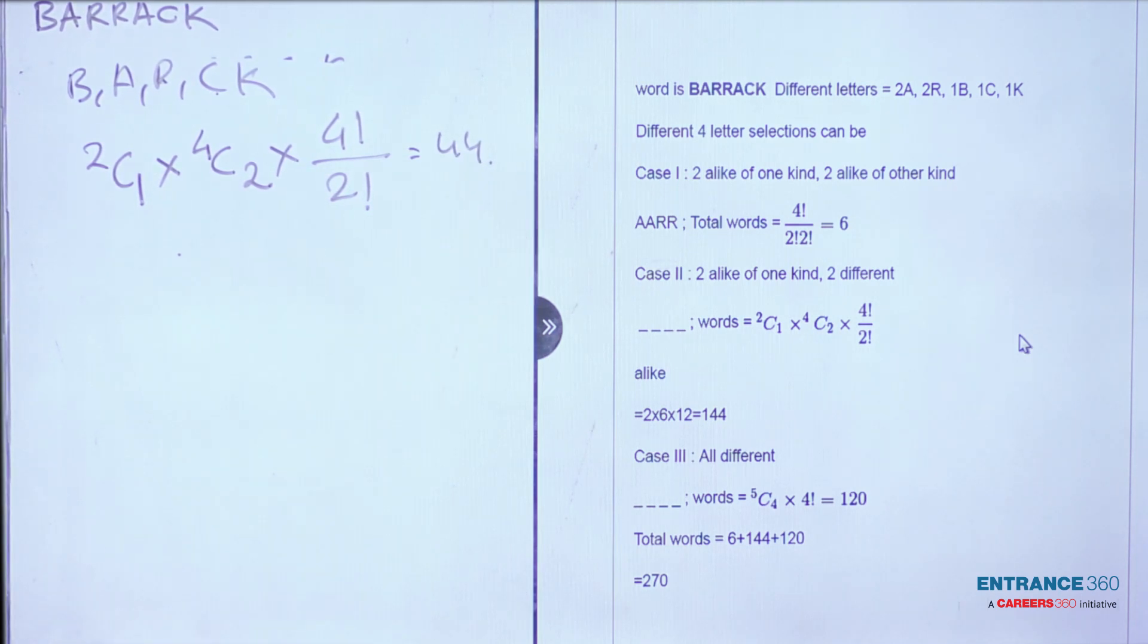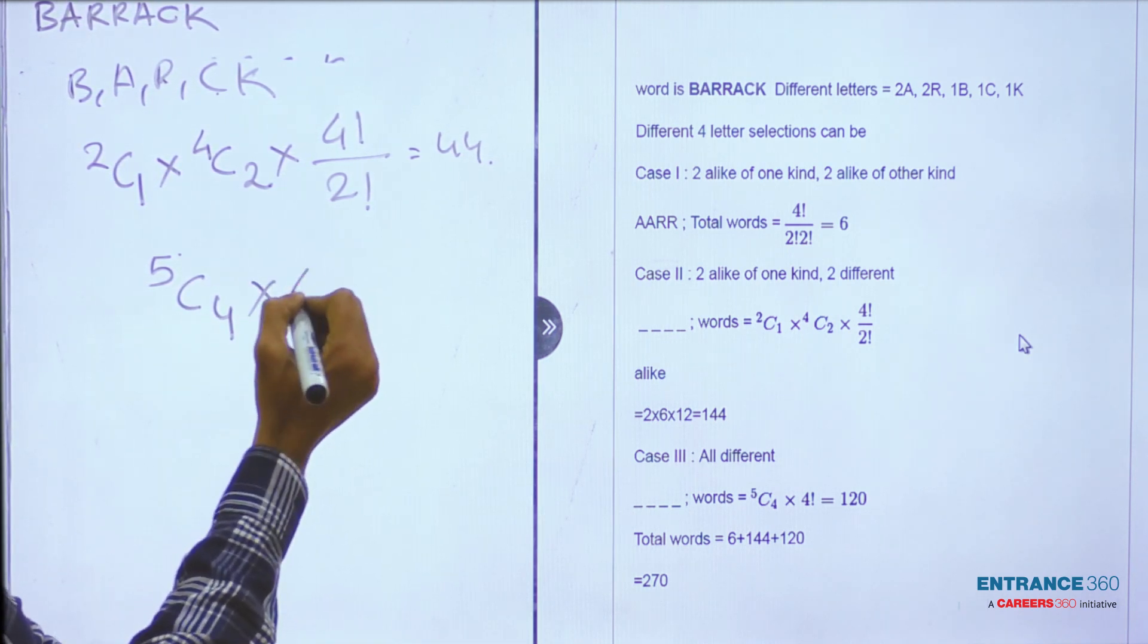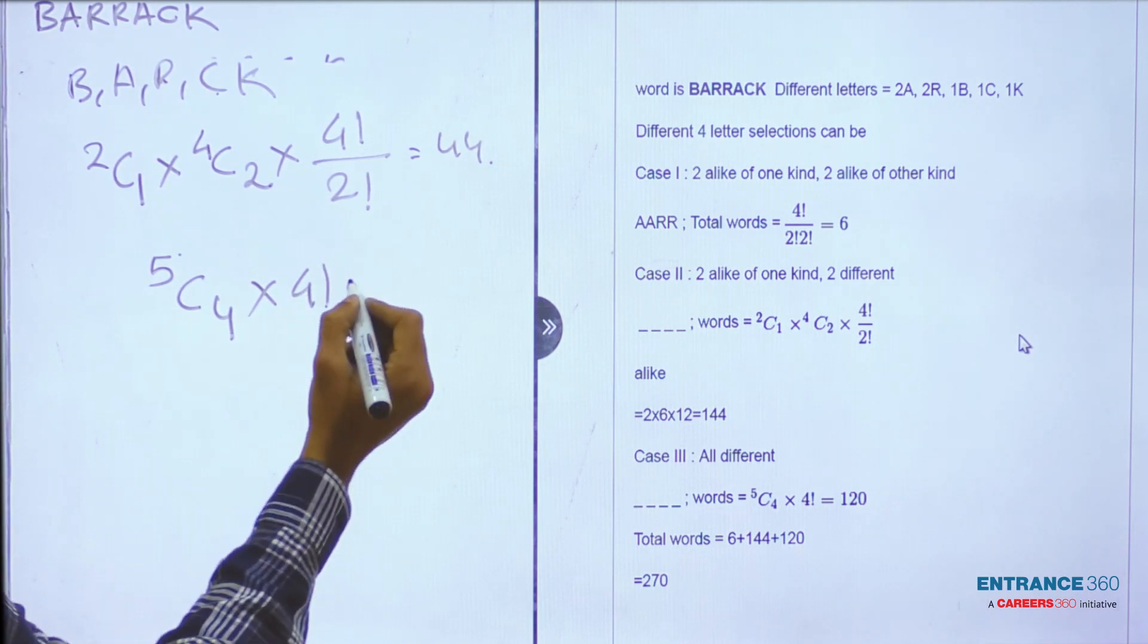Third case is when all the letters of the word are different. There are total five different letters. So these four letters can be selected in 5C4 ways and these letters are arranged in 4! ways. So total is 120.